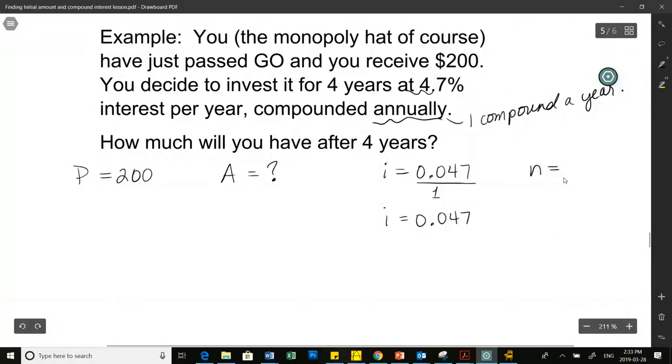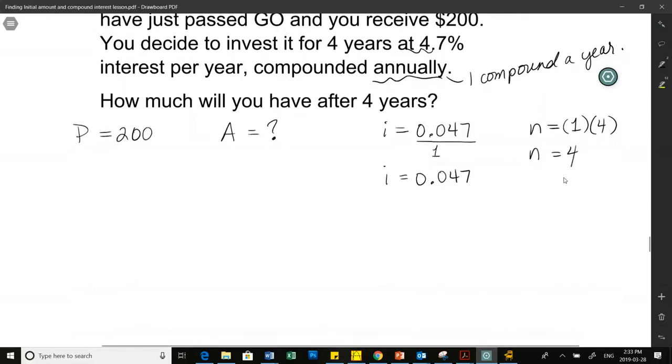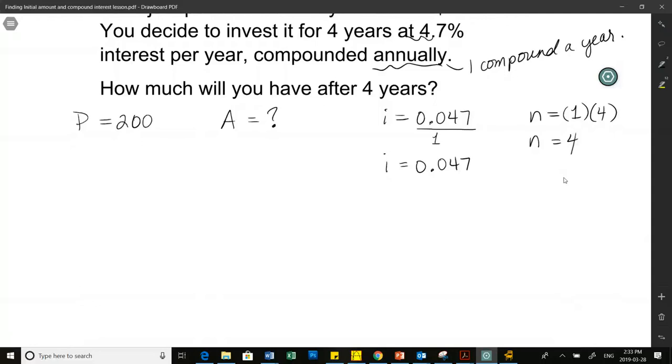And then n, number of compounds per year, which is one, times total number of years, which is four. So within four years, my interest has been compounded four times if it gets compounded once a year. So what I want to know for n is how many times over the total time span has the interest been compounded. So if it gets compounded once a year for four years, my n is four. For our questions today, it's going to be once a year only, and then we'll do more with it tomorrow.